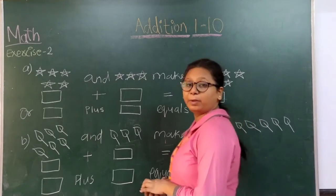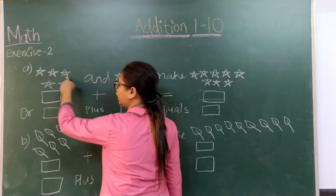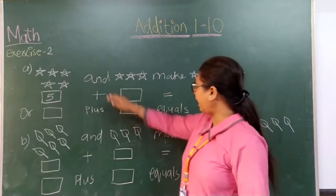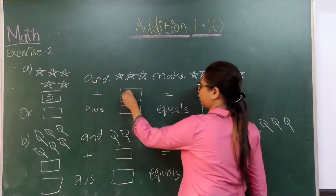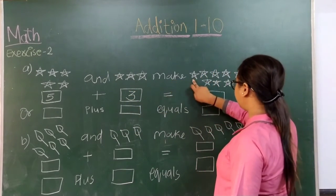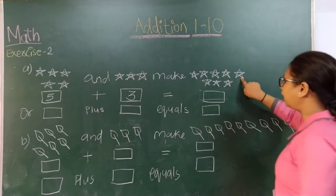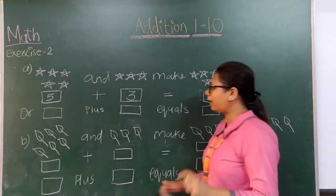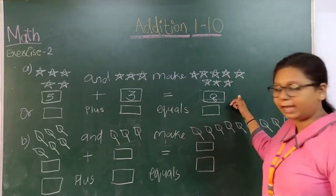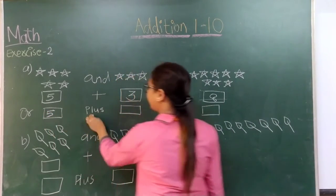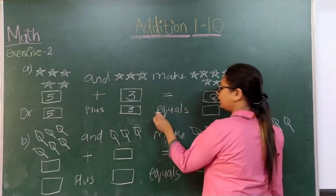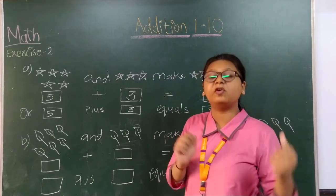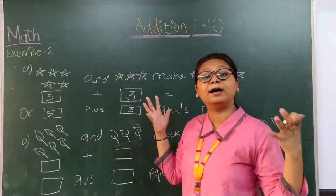So now moving on to exercise number 2, first sum. How many stars can we spot here? 1, 2, 3, 4 and 5 — so we write 5 in this box. And 1, 2, 3 — so 3 here. In total that makes 1, 2, 3, 4, 5, 6, 7 and 8 — so 8. We can write it as 5 plus 3 is equal to 8. That is when 3 is added to 5, or when 5 is added to 3, it becomes the answer 8.